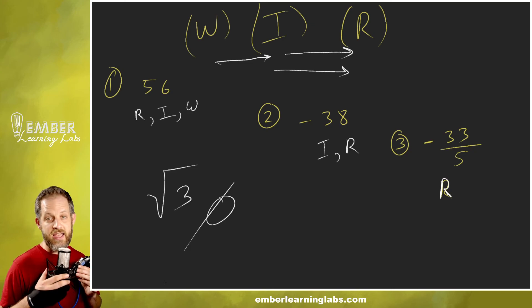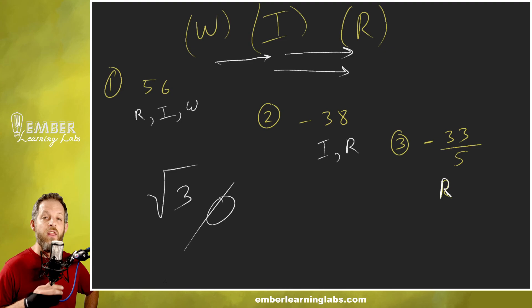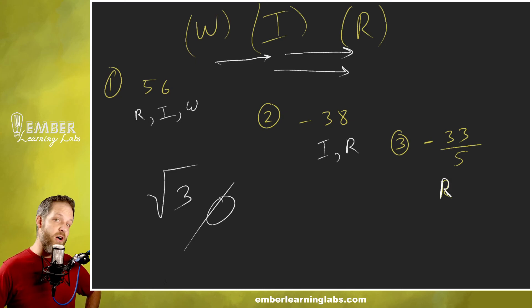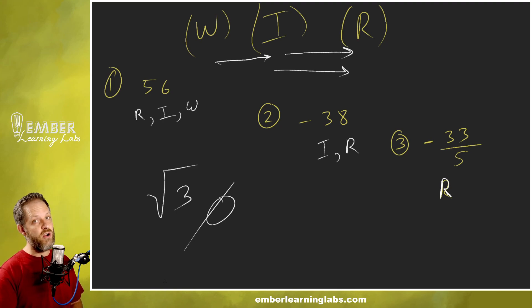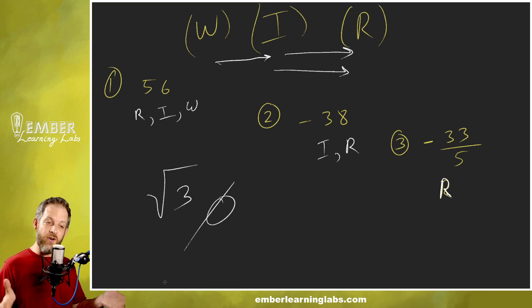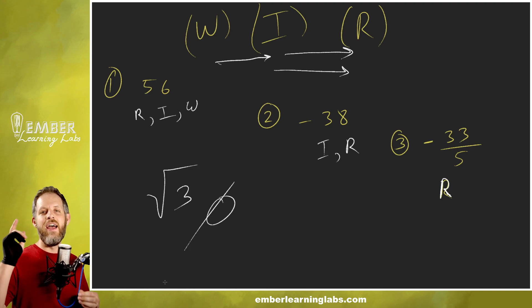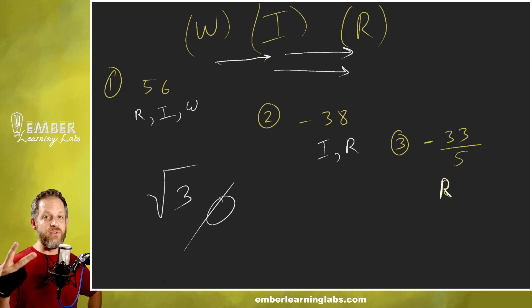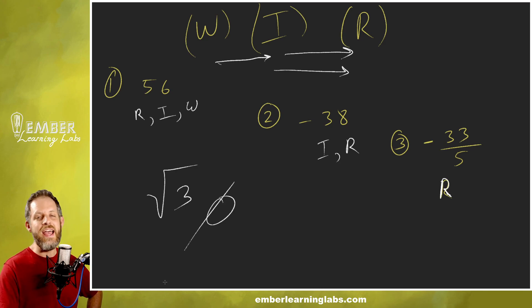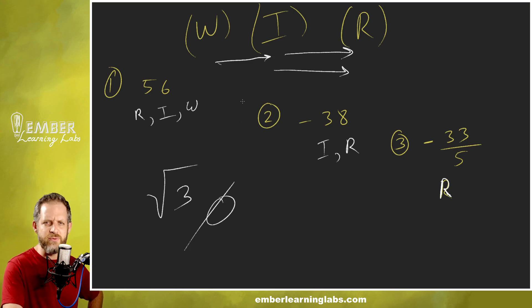The reason I mention that is because some students ask: is there anything that's not a rational number? Yes — they're called irrational numbers, and we'll talk about those in later courses. Thanks for watching. If you're one of my students, don't forget to do your homework — I look forward to seeing you in class. If you're not one of my students, I hope this video was useful. Let us know in the comments how we can help you with math or science content, and please hit subscribe and like this video. Have a great day!